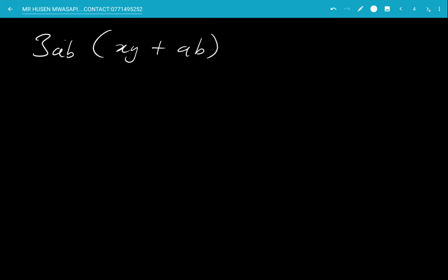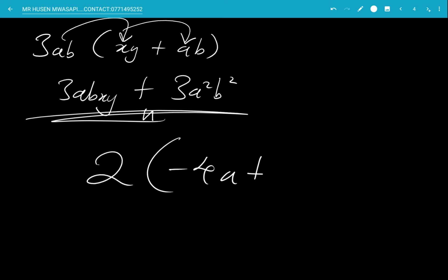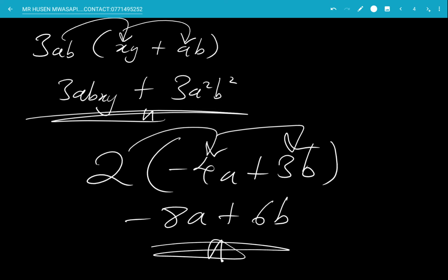You can have more complex expressions like 3ab multiplying open bracket xy plus ab. So 3ab times xy is 3abxy, and 3ab times ab gives plus 3a squared b squared. Another example: 2 multiplying open bracket minus 4a plus 3b. So 2 times minus 4a gives negative 8a, and 2 times 3b gives plus 6b. Since A and B are not the same, that is the final answer.